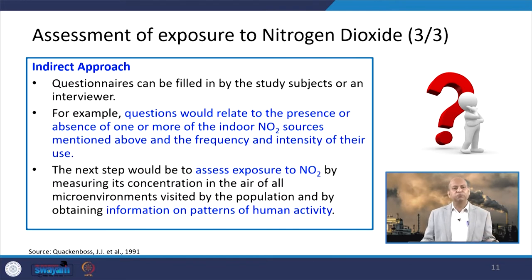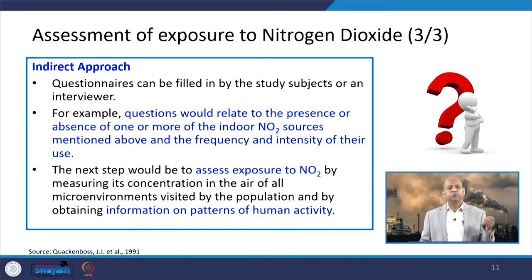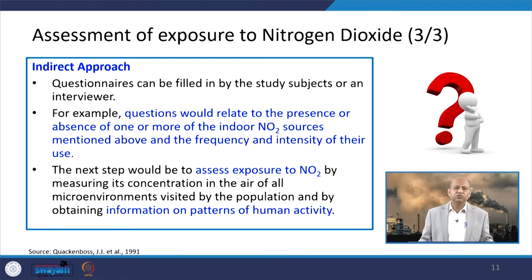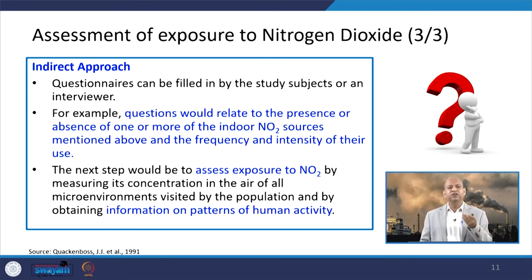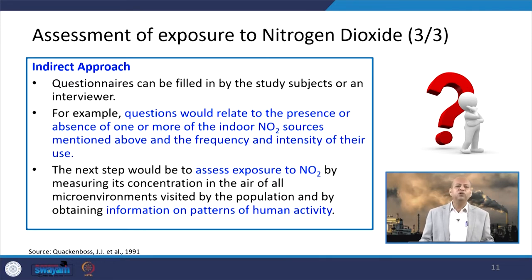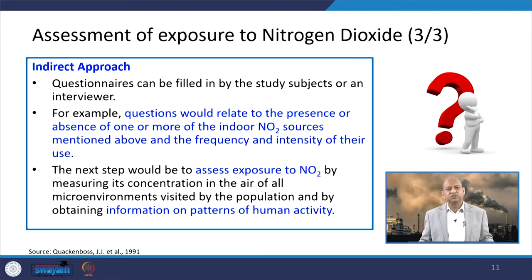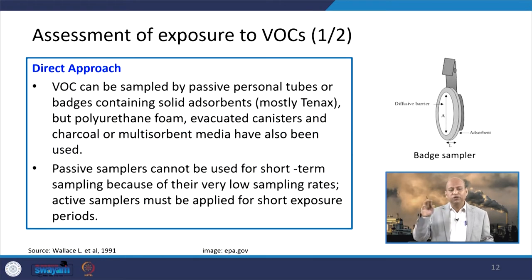In the indirect approach for nitrogen dioxide, questionnaire-based surveys can be filled by study subjects or an interviewer. Questions relate to the presence or absence of indoor NO2 sources and the frequency and intensity of their use. The next step is to assess exposure to NO2 by measuring its concentration in the air of all micro-environments visited by the study population, and by obtaining information on patterns of human activity so that correlations can be made.